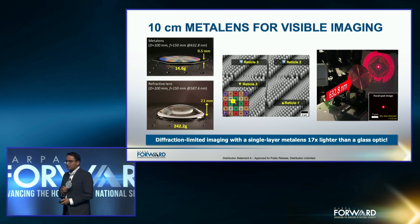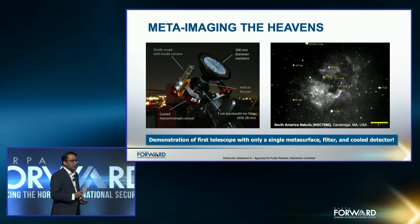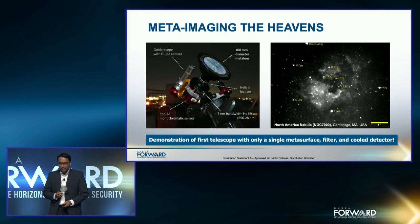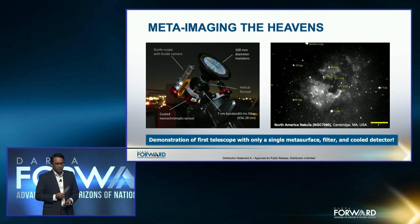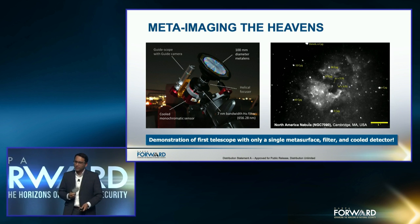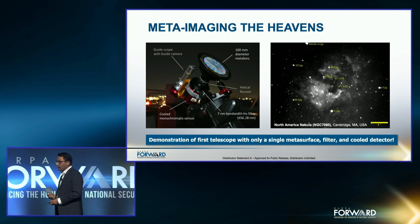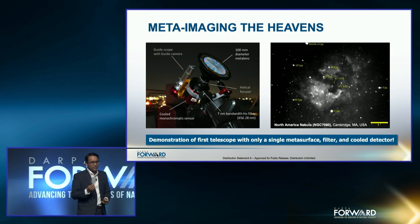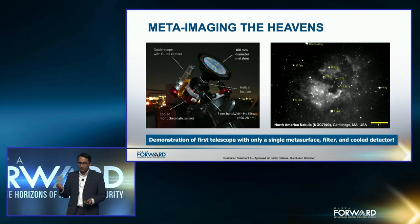They went one step beyond that and integrated it into the first meta-optic telescope. This is a telescope that includes only one optic — this lens — along with a helical focuser, a narrow-bandwidth filter lined up with the bandwidth of this lens, and a cooled monochromatic sensor. Since the team is in Cambridge, they started taking images of the North American Nebula, as you can see on the right hand side, effectively a 200-second capture averaged together. This is truly the first demonstration of a telescope that includes just a single meta-surface, a filter, and a cooled detector.